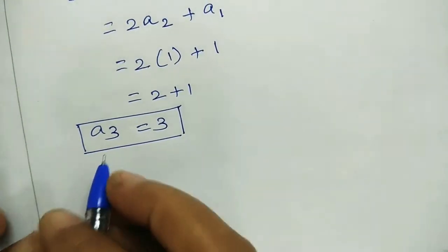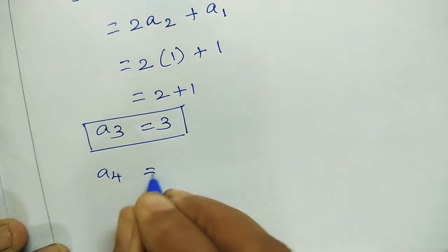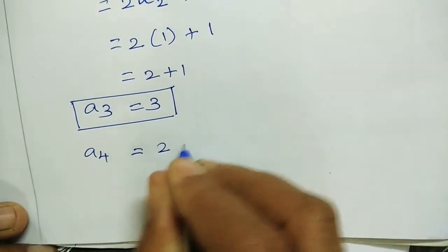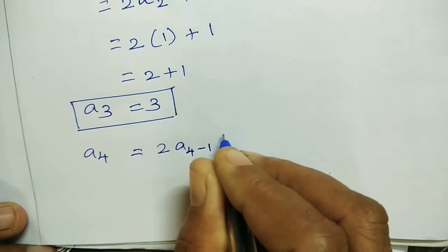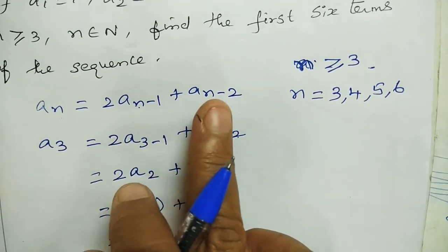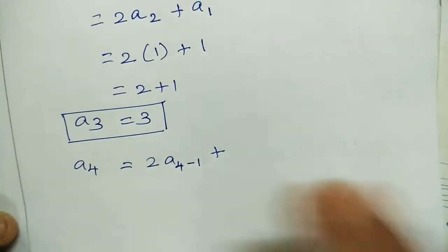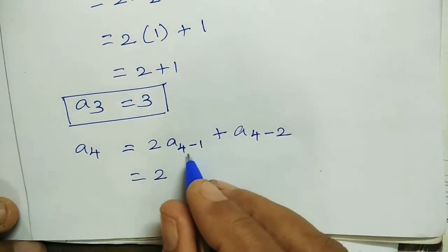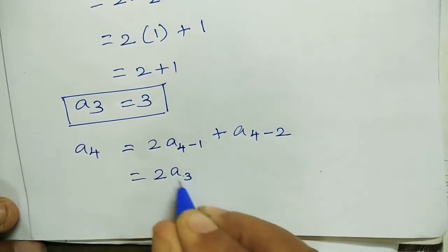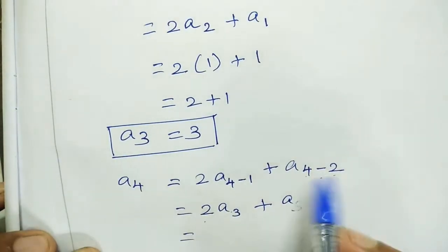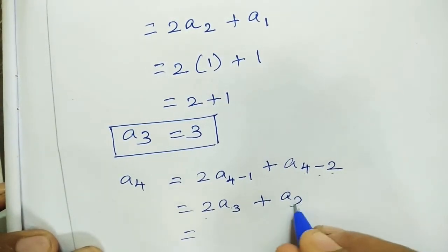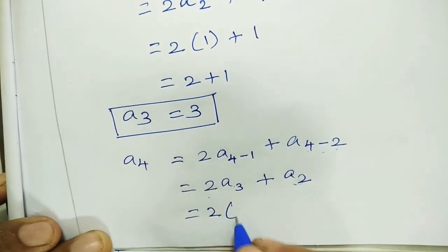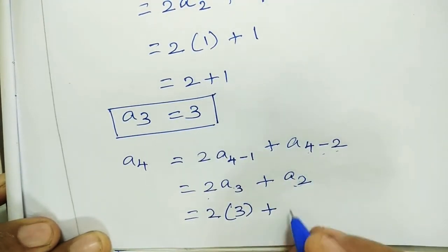a4 equals 2 times a4 minus 1 plus a4 minus 2. a4 minus 1 is a3, which equals 3. Plus a4 minus 2 is a2. 2 times a3 is 2 times 3, which is 6, plus a2 which is 1.